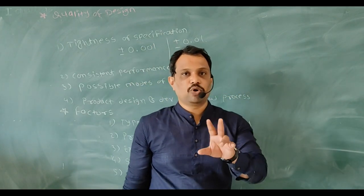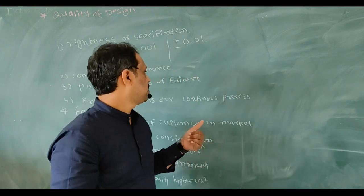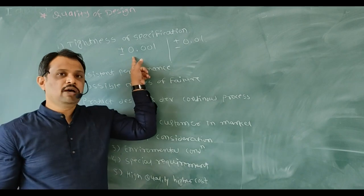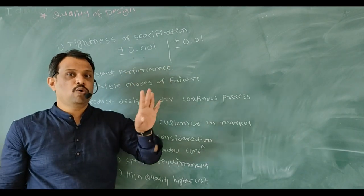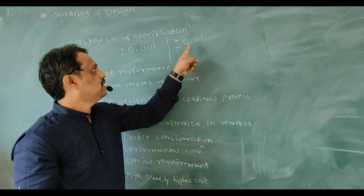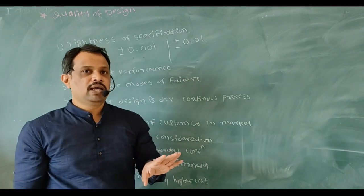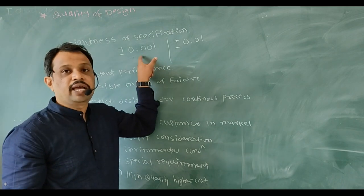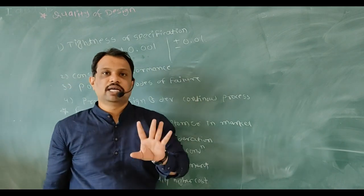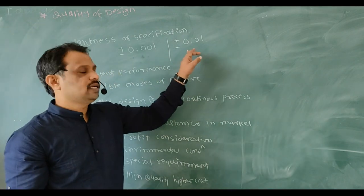Consider two parts, Part A and Part B. For Part A, I have given a tolerance of plus minus 0.001, and for Part B, the tolerance is plus minus 0.01. So Part A has a tighter tolerance of one micron, whereas Part B has a tolerance of ten microns. Part A is tighter than Part B.